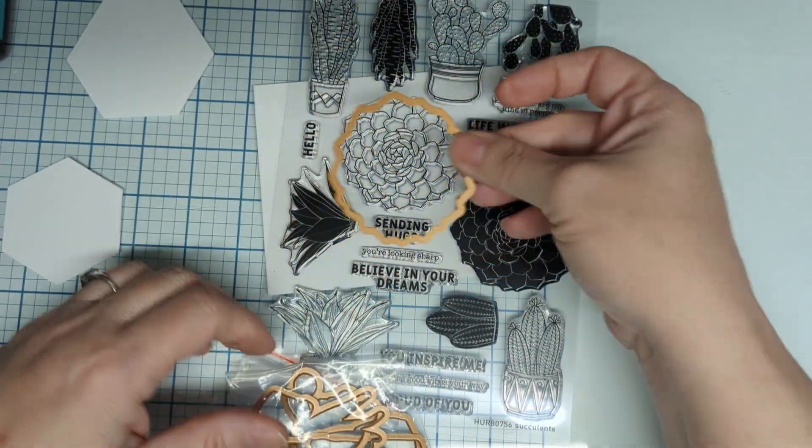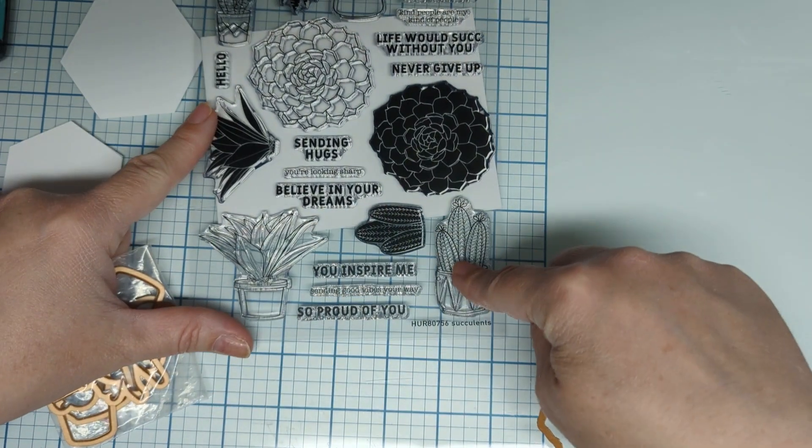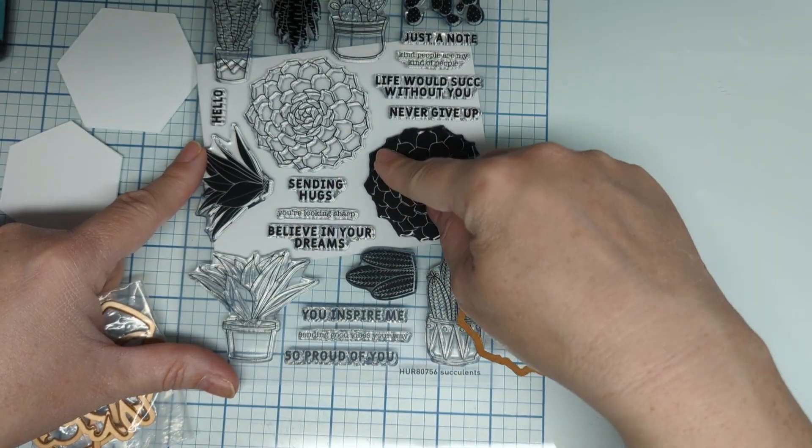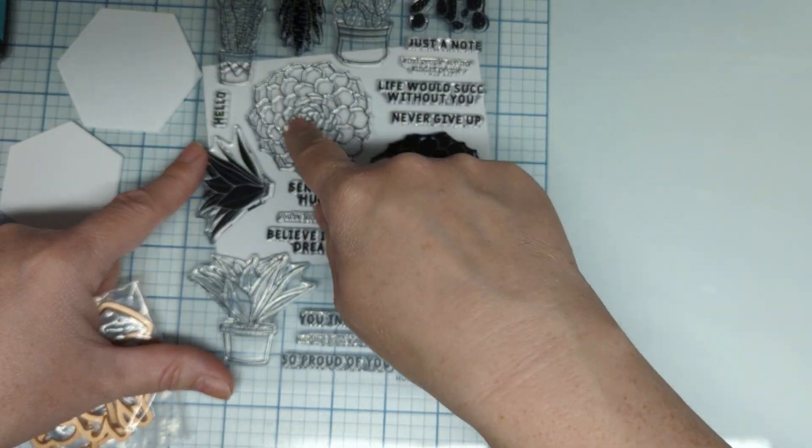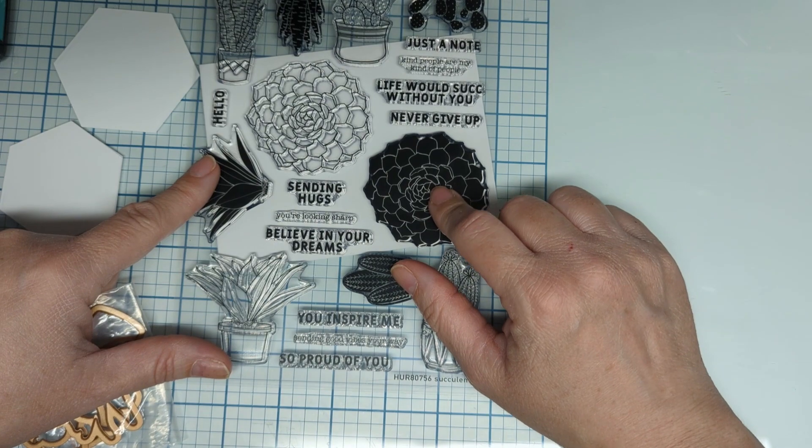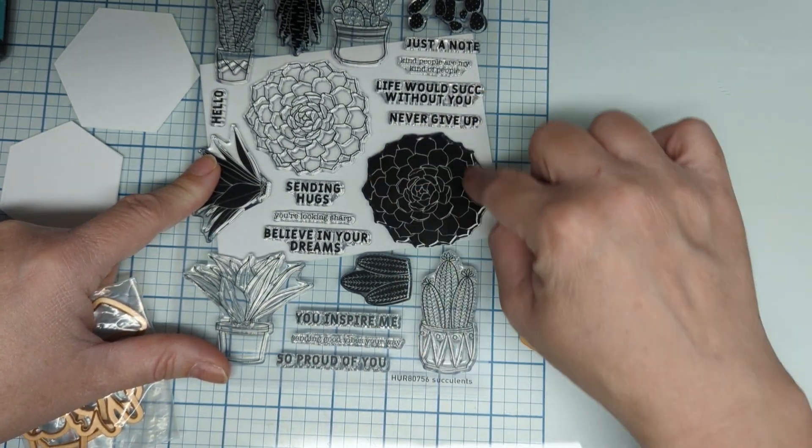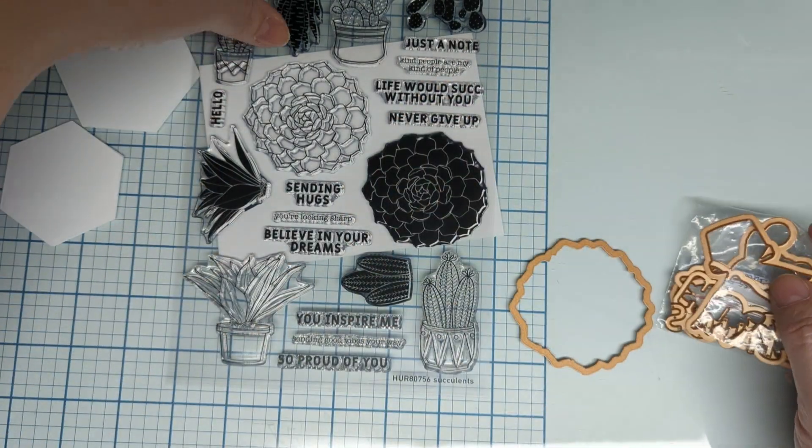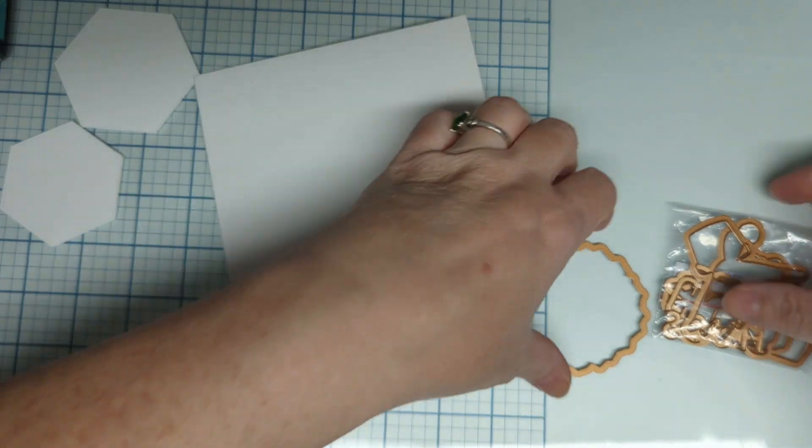And these ones do have coordinating dies. All these black ones, you can color them up and stamp them. So you don't have to color them with pens if you don't want to. You can make your life a lot easier. Add some light green, dark green, and then darker green. You can do a fade with your inks, however you want to do it. Lots of great opportunities there.